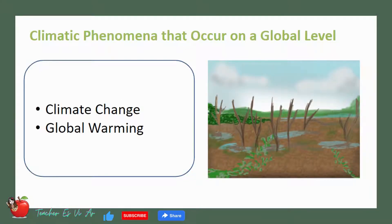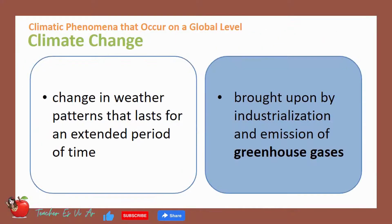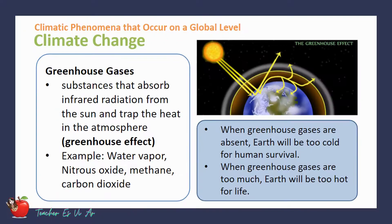Two of the climatic phenomena that we are going to discuss are climate change and global warming. Let's start with climate change. Climate change is the change in weather patterns that lasts for an extended period of time. It is brought upon by industrialization and emission of greenhouse gases. Greenhouse gases are substances that absorb infrared radiation from the sun and trap the heat in the atmosphere. The absorption of radiation is called the greenhouse effect.